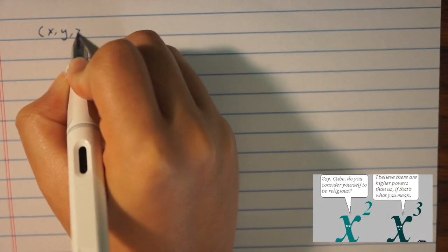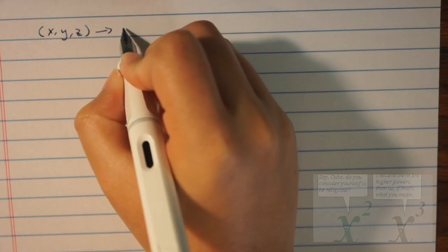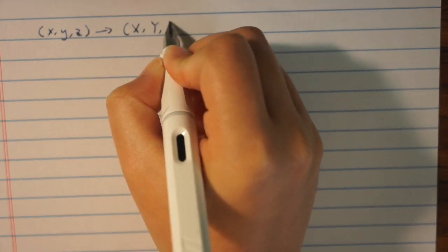Now, how do we go from little x, y, z to capitalized X, Y, Z?